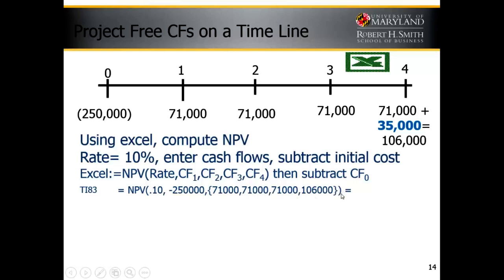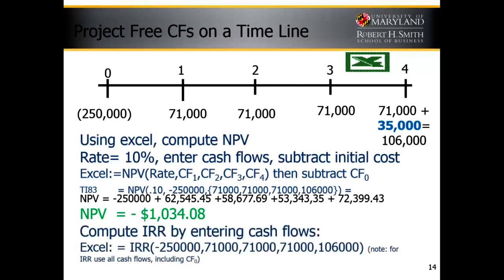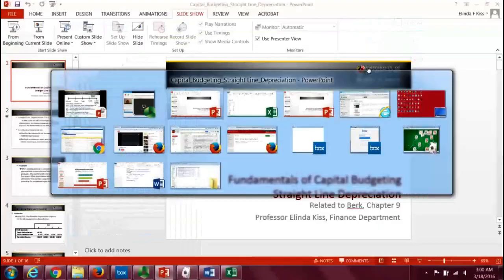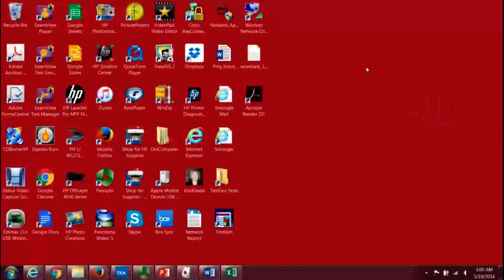If you want to get the present values of each individual cash flow, I have that here. Our net present value is negative, so after all this, we shouldn't undertake this project — it would decrease our wealth. If we calculated the internal rate of return, we would see that it is less than our cost of capital at 9.82%.